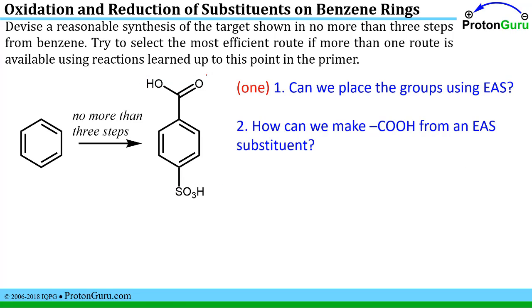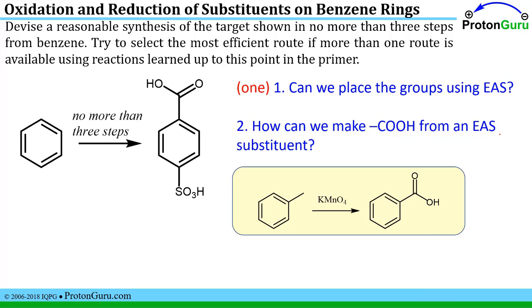So how can we make a carboxylic acid from something we can place onto the benzene ring using electrophilic aromatic substitution? A standard way to do this is to have a methyl group and treat it with a strong oxidizing agent like potassium permanganate, which will give you the carboxylic acid. And of course we know how to put methyl groups or any other alkyl groups on a benzene ring using electrophilic aromatic substitution.